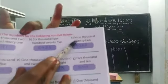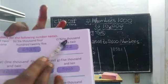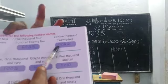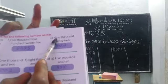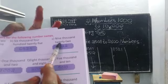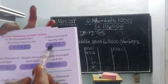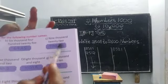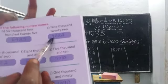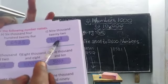Third one: 9,022. 9,000 — in the hundreds place, no number. Last 22, in the tens place, no number. So we write 9,022.